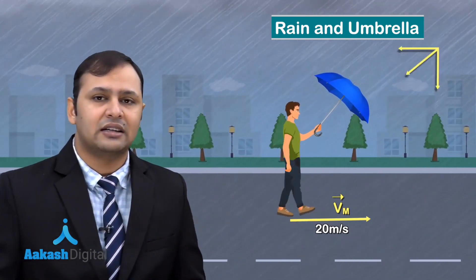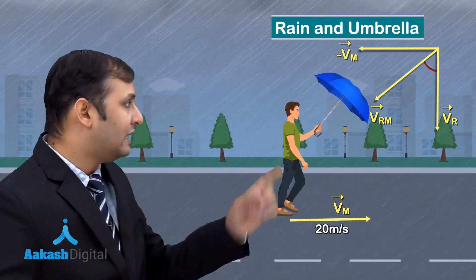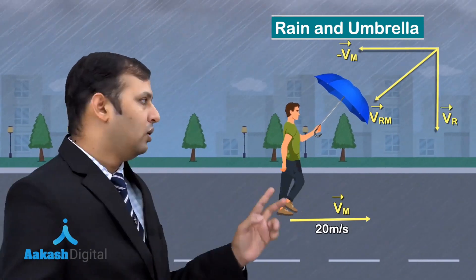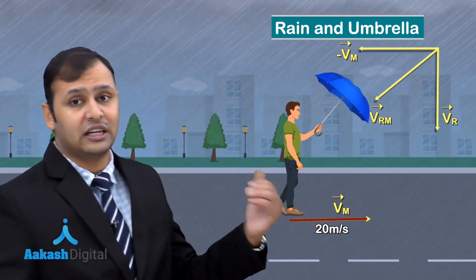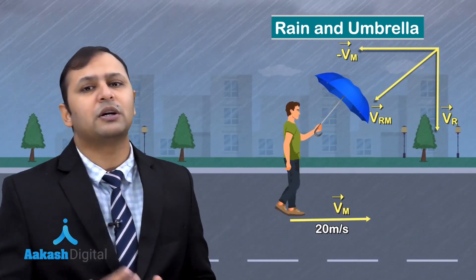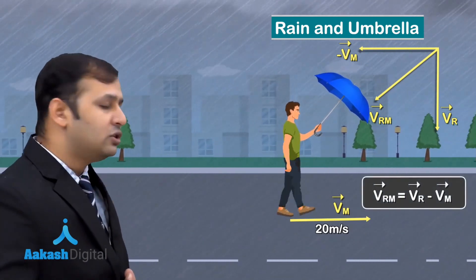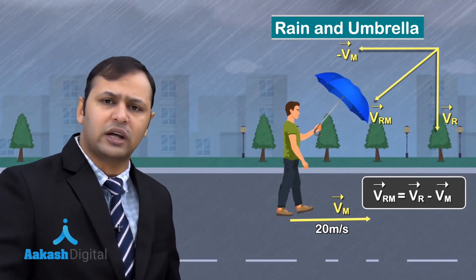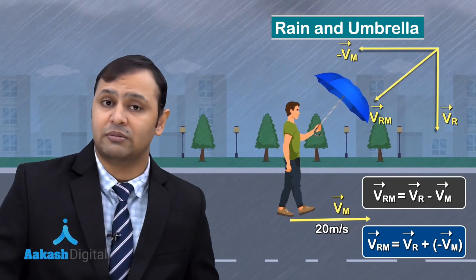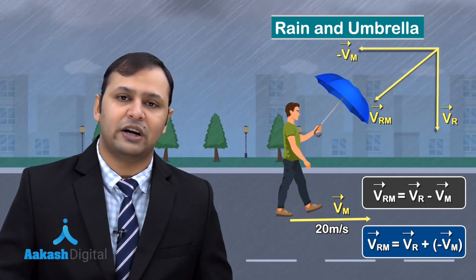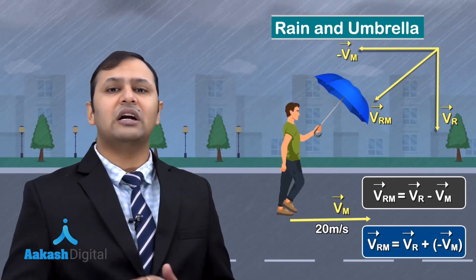The velocity of rain with respect to man (VRM) is at an angle with the vertical. Rain with respect to ground is vertically downward, and the man is running towards the left with respect to ground. So VRM = VR − VM, which can also be written as VR + (−VM), that is, adding the negative of the velocity of man — justified by the wind velocity analogy.